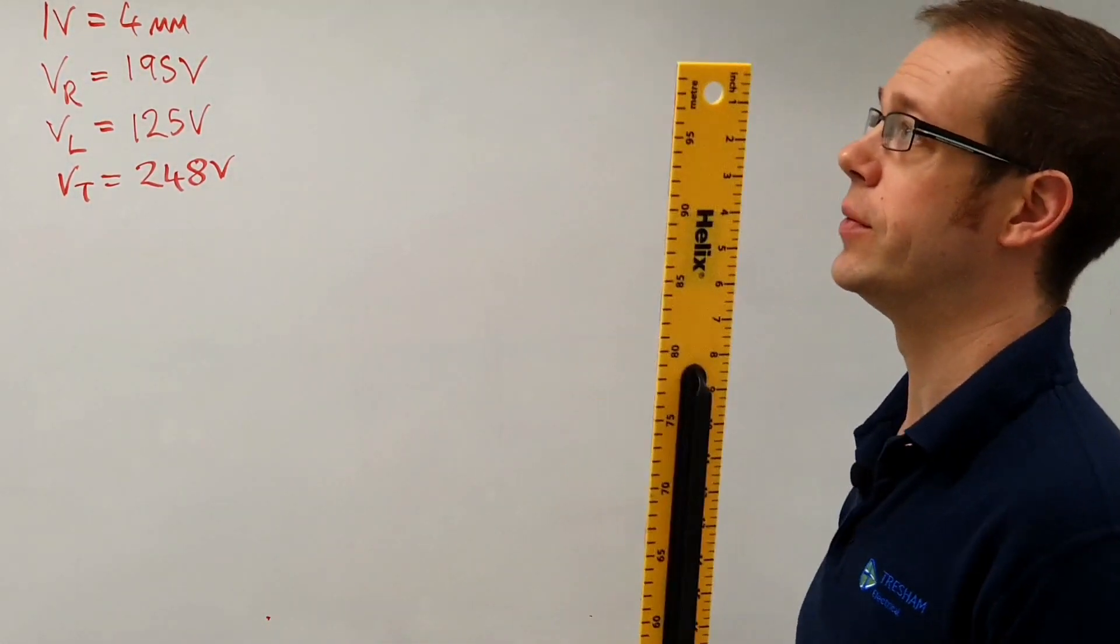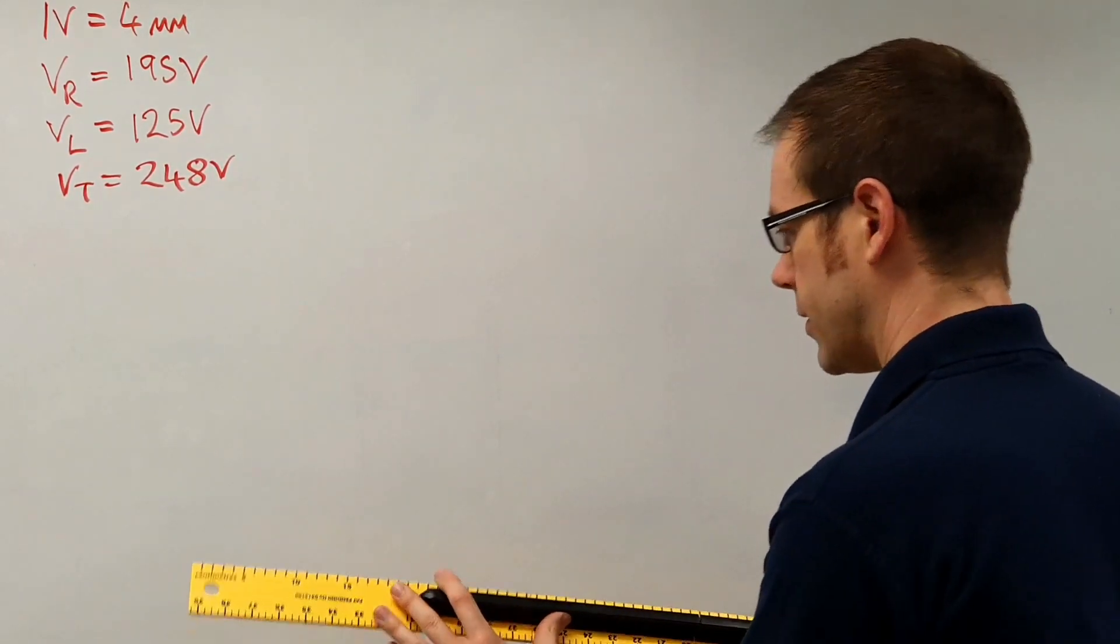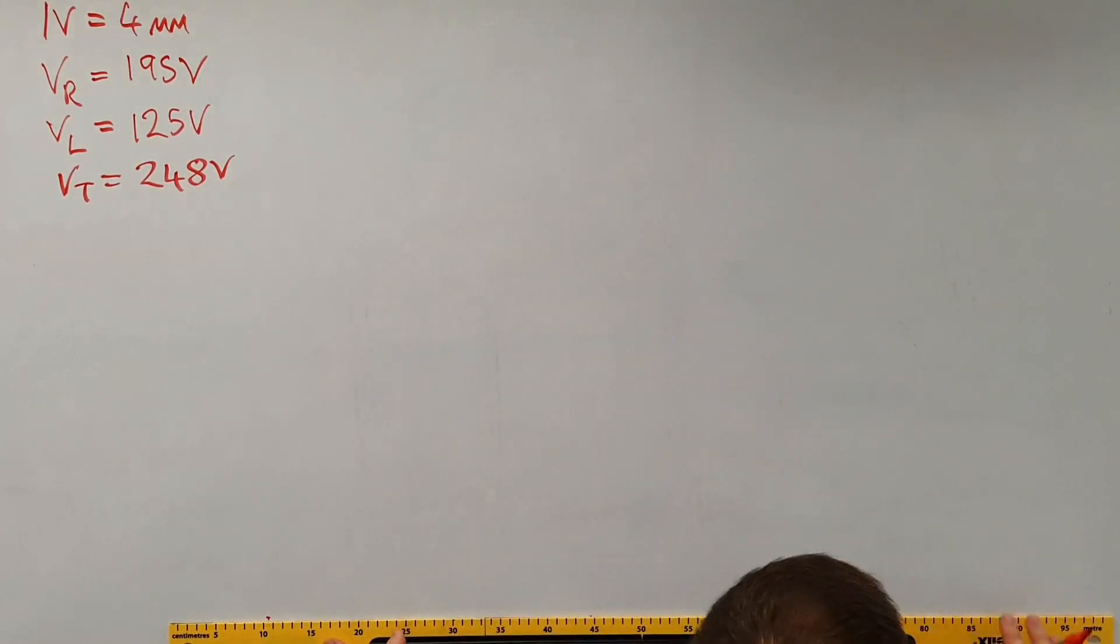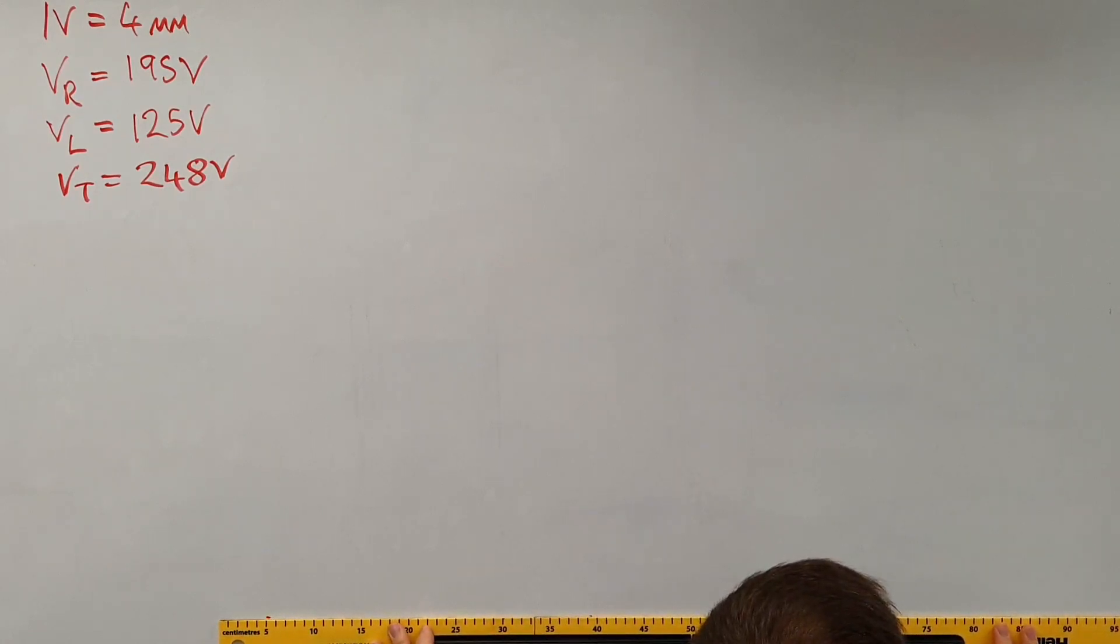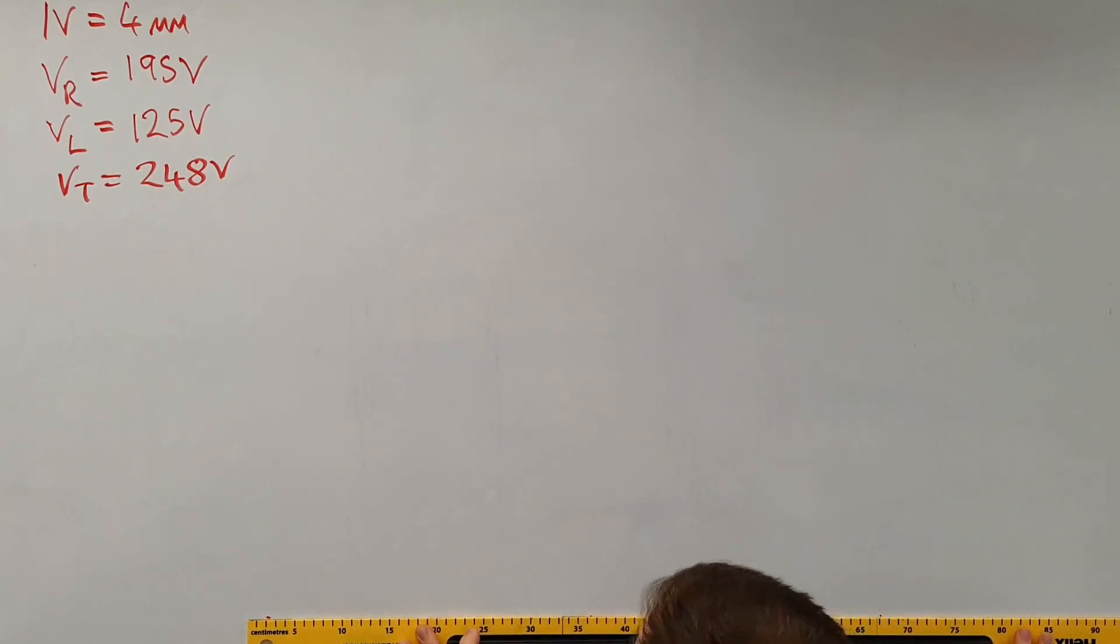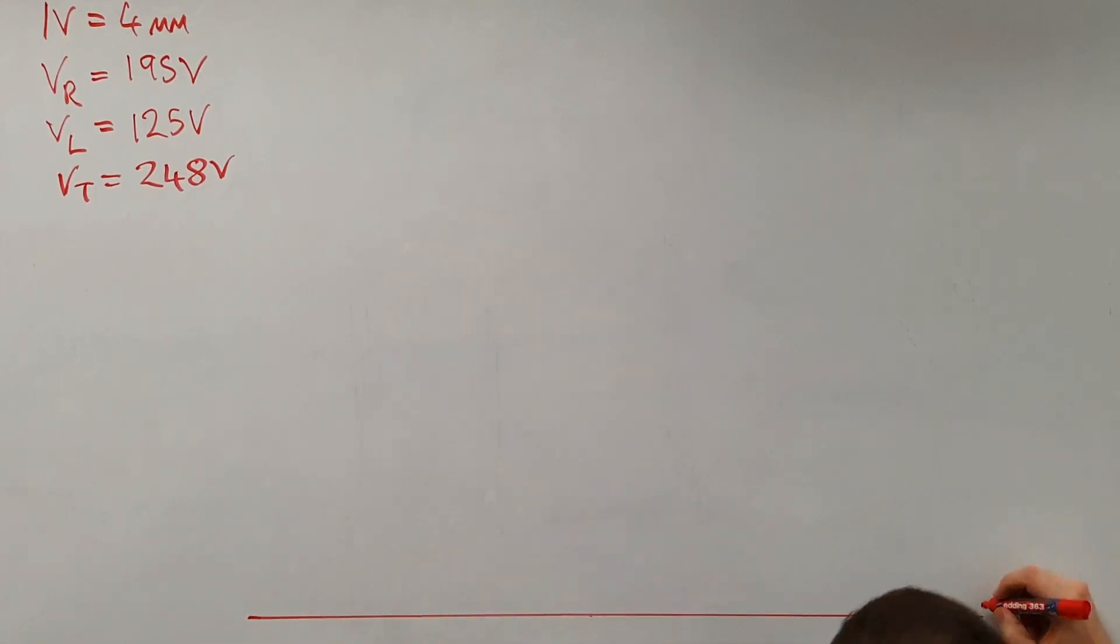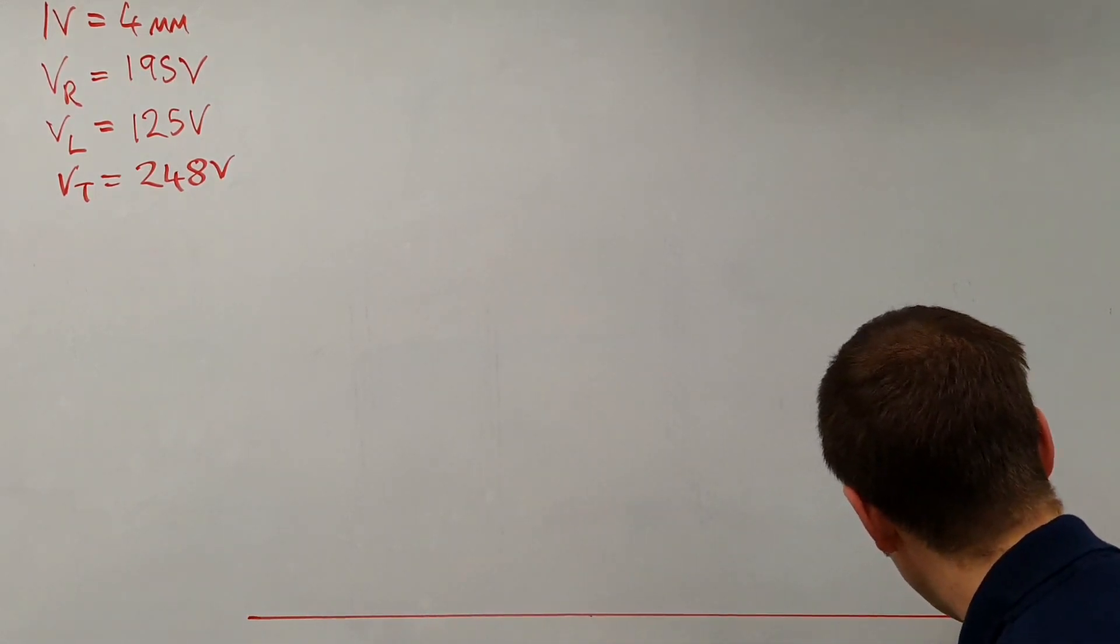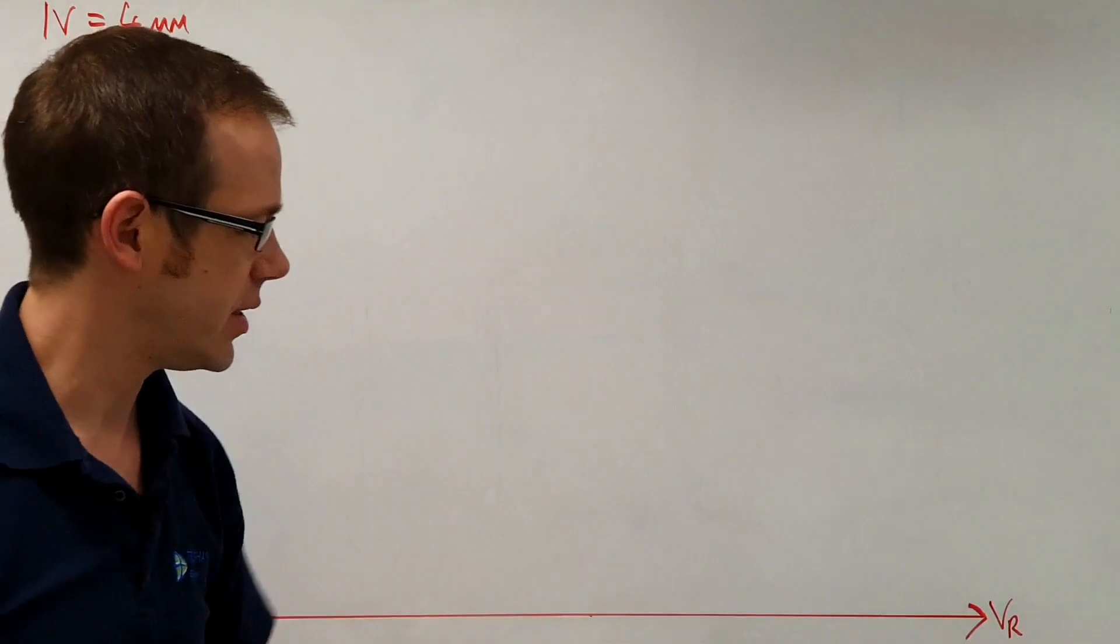So I'm going to line this up here and I'm going to draw 78 centimeters, and I'm going to draw a line that follows that along there like that. So that line there represents my resistive voltage, VR. So there we go, that line represents our resistive voltage.